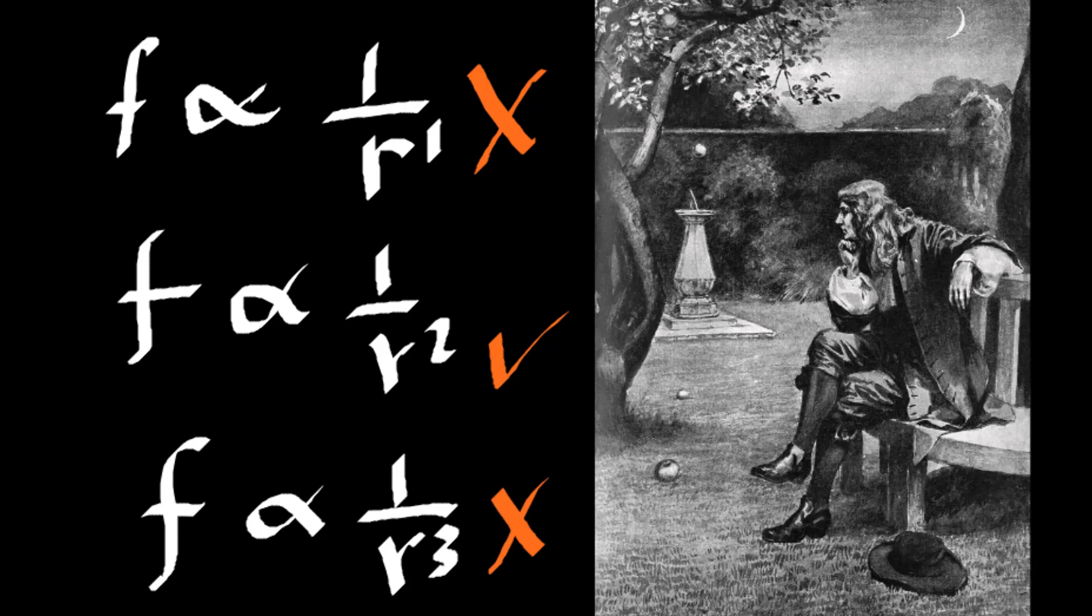It seems that Newton was so lucky that he might have only tried three integers, namely 1, 2, and 3, before he concluded that the gravity must be inversely proportional to the distance square.